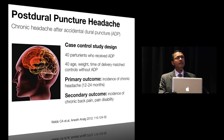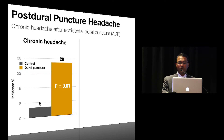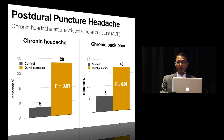Approximately 18 months after childbirth, 28% of parturients with a history of dural puncture reported a headache compared to only 5% in the control group. Patients who had a dural puncture were more likely to have chronic back pain, with those in the dural puncture group reporting almost a 43% incidence, whereas the incidence was only 15% in the control group. Both findings were statistically significant, and not surprisingly, both chronic headache and chronic back pain were accompanied by significant disability.